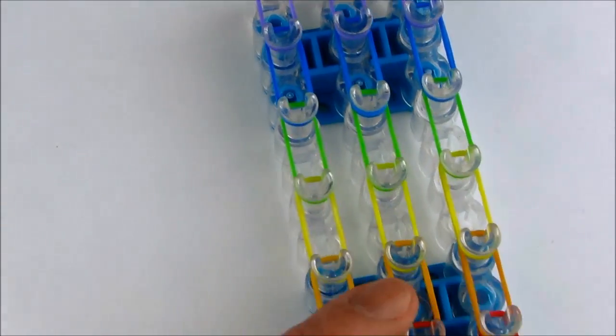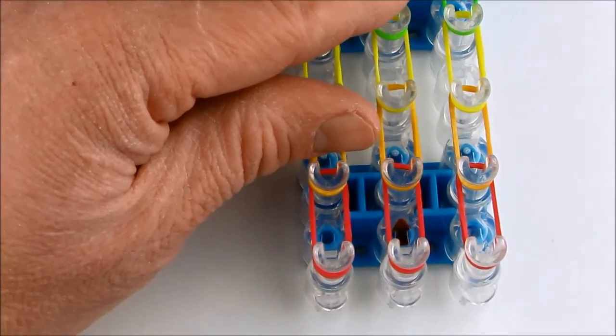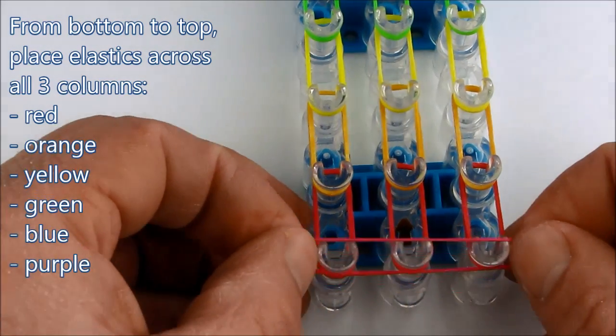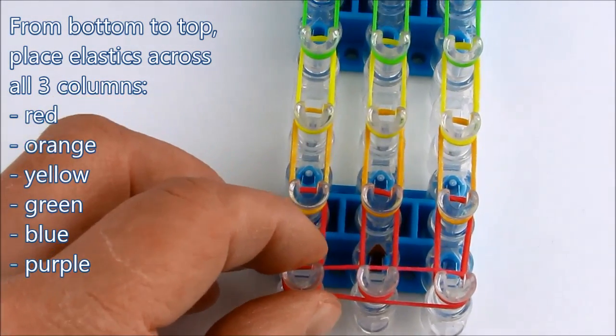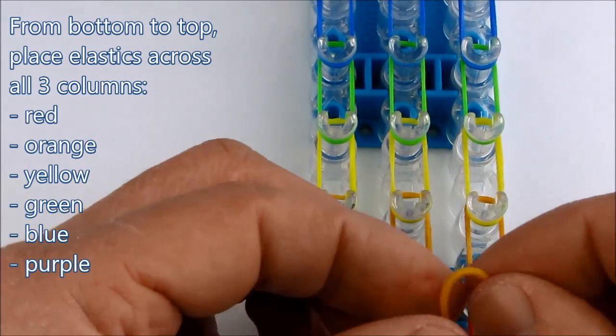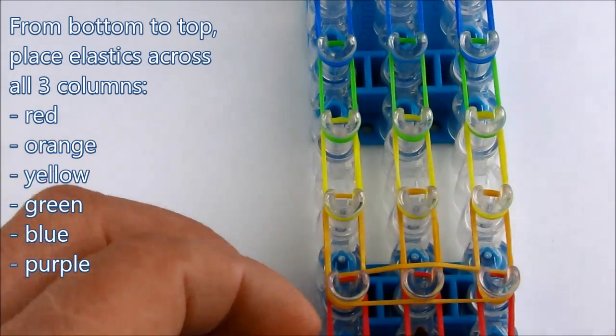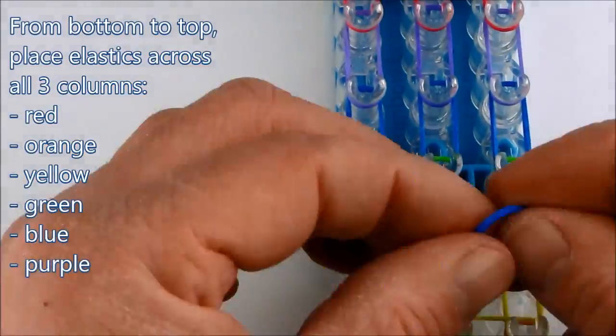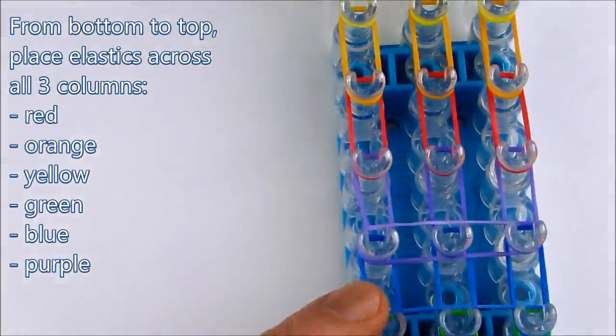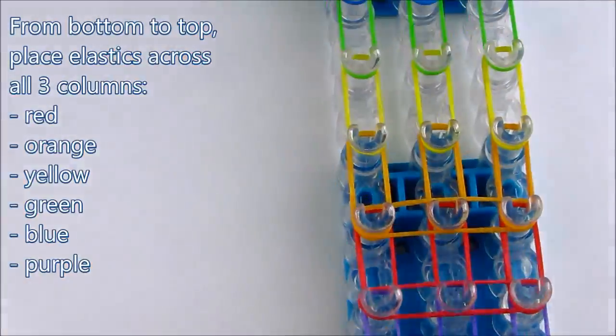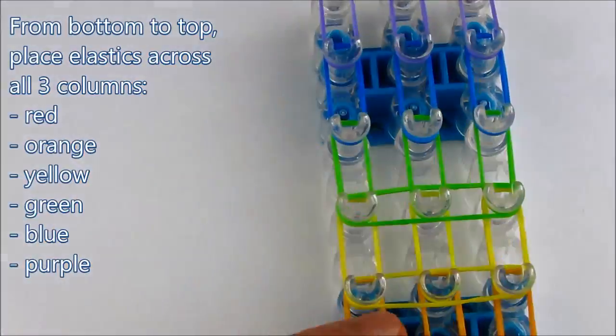Now from the bottom to the top, we place an elastic across all three columns in the same color sequence as we had before. So red, orange, yellow, green, blue and purple. Do not place any elastics across the top row.